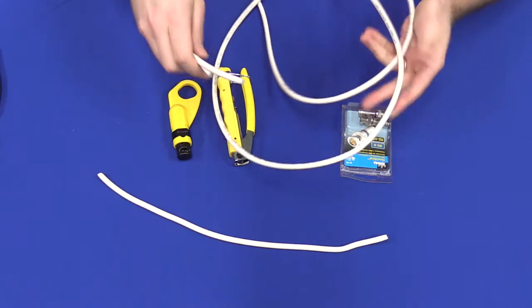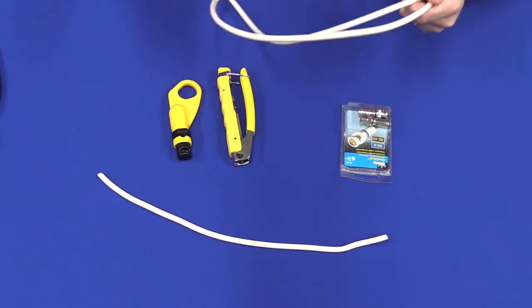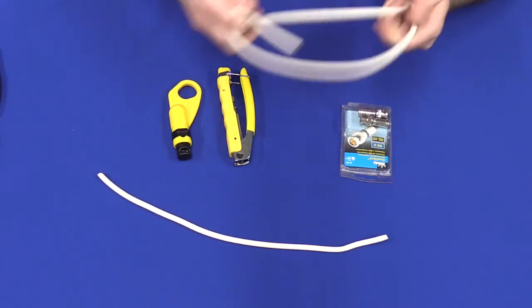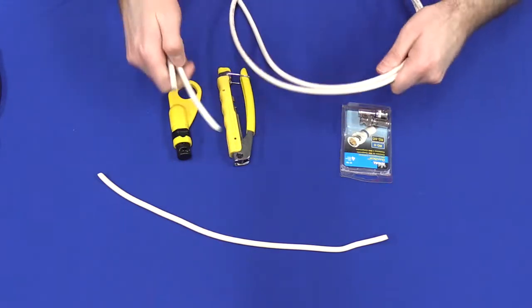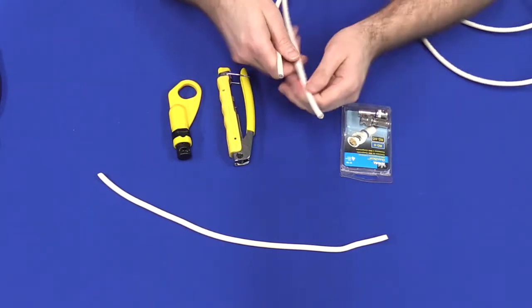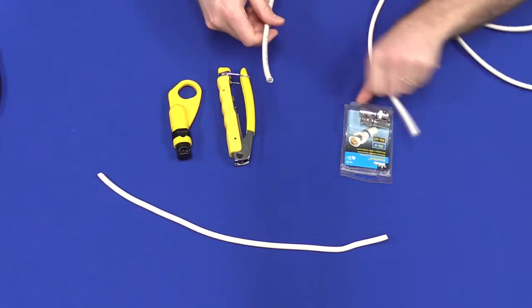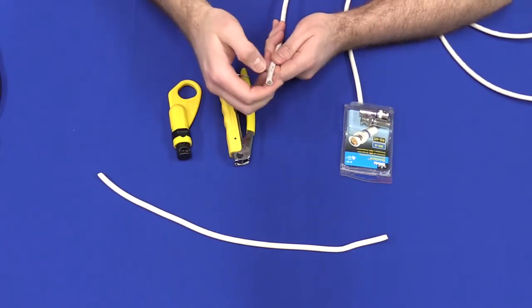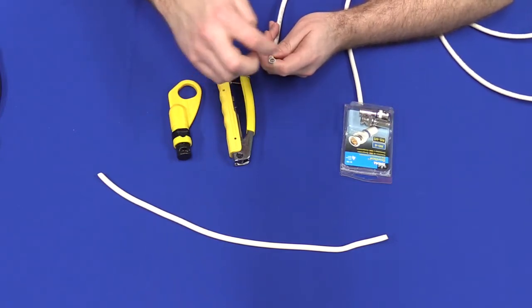When you measure your cables, make sure to give a little extra space than you may need. This will allow for slack or a little extra room if you need it. Once you have your cable cut to the correct size, you're going to strip the cable of the outer casing as well as the insulation.